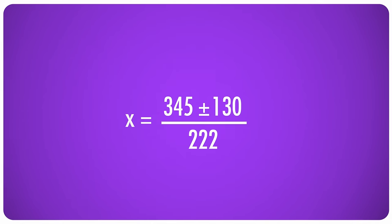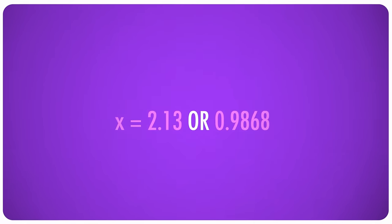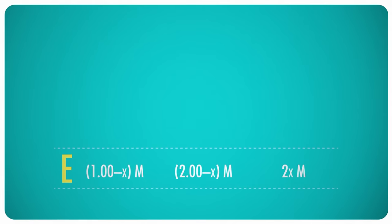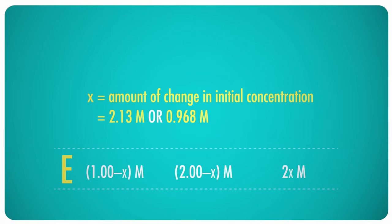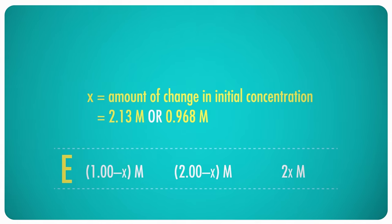And because of the way the quadratic formula works, we'll get two possible answers. To figure out which answer is the right one, think back to the beginning of the problem. I said the initial concentration of the H2 was 1 molar, and the initial concentration of the F2 was 2 molar, and X is the amount that each one lost, right? Well, neither the H2 nor the F2 could possibly lose 2.13 moles per liter when they both started with less than that already. So clearly, the correct answer has to be 0.968 molar.